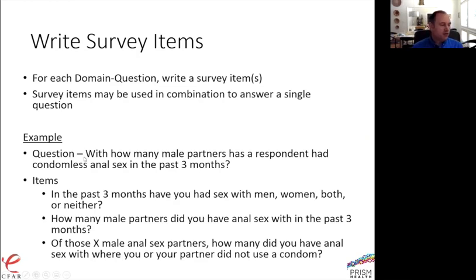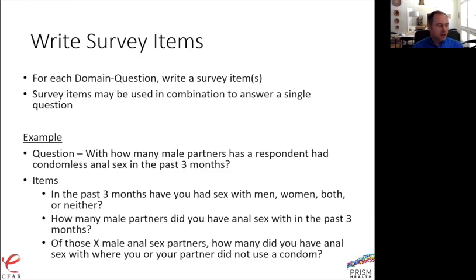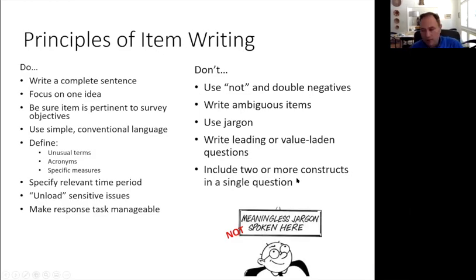If you need to write new items, remember that a question like 'how many male partners did a respondent have condomless anal sex with in the last three months' is a complex construct. You may be better to break it down: first ask 'in the last three months, have you had sex with men, women, both, or neither' — a non-value-laden way to ask. If they've had male partners, ask how many they had anal sex with, then of those, how many involved anal sex where neither partner used a condom the whole time. One question may need multiple items to decrease cognitive burden.